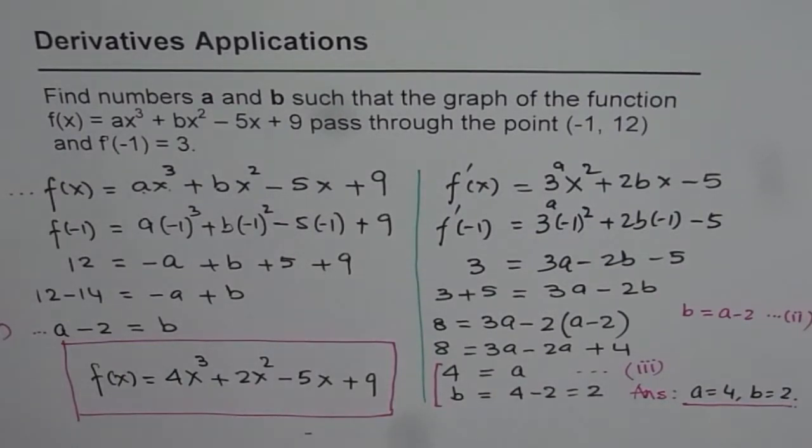So that's how you can solve for such problems. So whenever you have these kinds of questions, where equation is given with some unknowns, see what else is given. Every condition will lead to one equation, and that equation should help you solve for the variable or the unknown. So I hope these steps are very clear, and you'll be able to answer any question based on this kind of example. Thank you, and all the best.